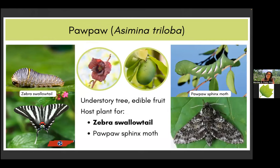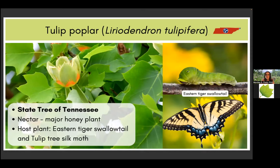The next tree is the pawpaw, an understory tree with edible fruit. It is the only host plant for our state butterfly, the zebra swallowtail, and also the host plant of the pawpaw sphinx moth. That brings me to our state tree, the tulip poplar. It is a major honey plant and also the host plant of the eastern tiger swallowtail and the tulip tree silk moth. The caterpillar has eye spots, and whenever a predator approaches, the head grows really large to mimic a little snake, and it can also secrete a really strong smell.